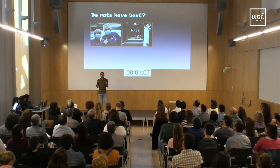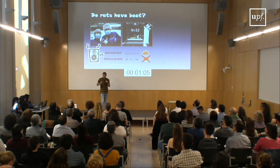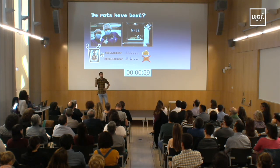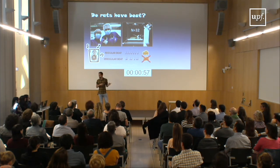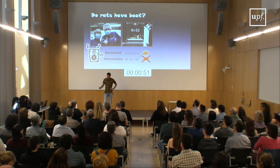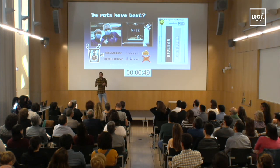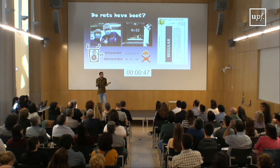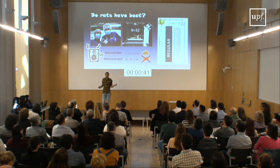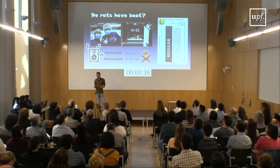We took 32 rats and trained them to distinguish between regular sounds and irregular sounds. We presented regular beeps followed by a food reward, and irregular beeps with no food reward. After a lot of training sessions, we created new stimuli at faster or slower tempos, and we found that rats asked for food more often for the regular ones — so they could discriminate regularity in the stimuli.